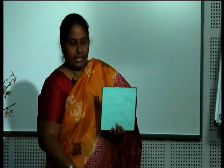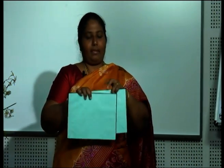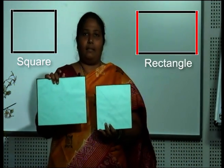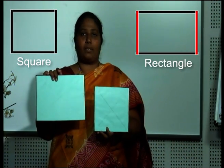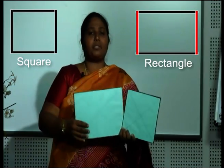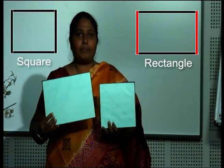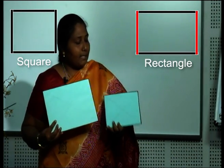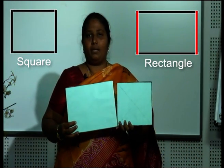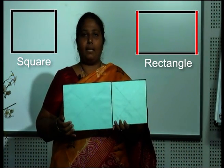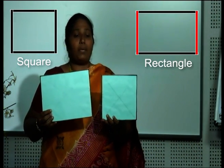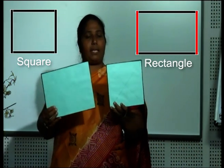Now, what do you see here? This is a square and this is a rectangle. I am sure all of you have learnt about this in your earlier classes. Is there a difference between a rectangle and a square? A square has all four sides equal, whereas in a rectangle, the opposite sides are equal.